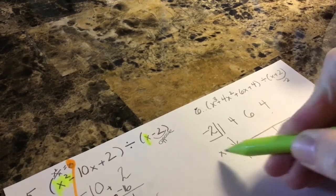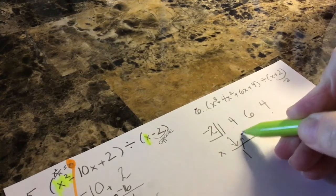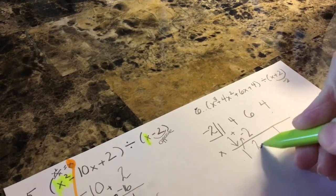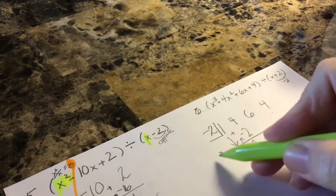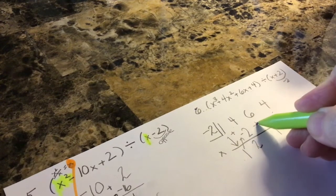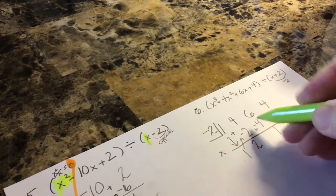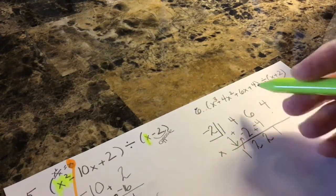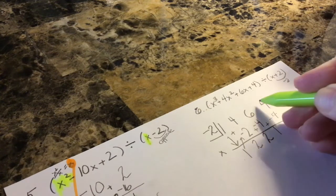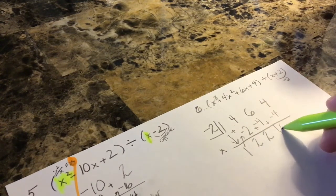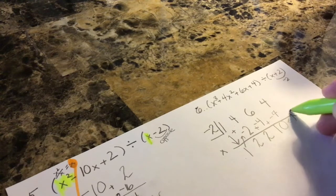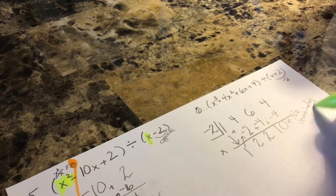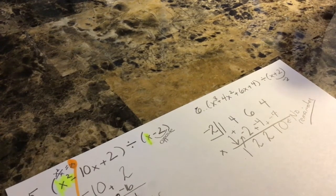Bring down the first one. Multiply. 1 times negative 2, put that answer here, it's negative 2. Add. 4 plus negative 2 is 2. Multiply. Negative 2 times 2, negative 4. Add. 6 plus negative 4 is 2. Multiply. Negative 2 times 2, negative 4. Add. 4 plus negative 4 is 0, which means no remainder. Yay!